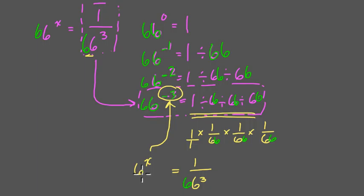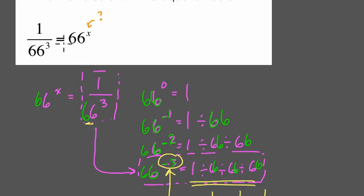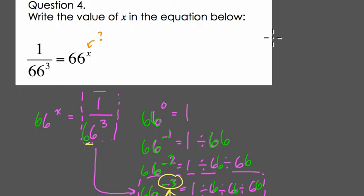So here, 66 to the negative 3rd also gave us 1 over 66 to the positive 3rd. And x, again, is negative 3. So here, we're reminded of one of the most basic laws of exponents, that 66 to the negative 3rd power is the same as 1 over 66 to the 3rd. Thanks.